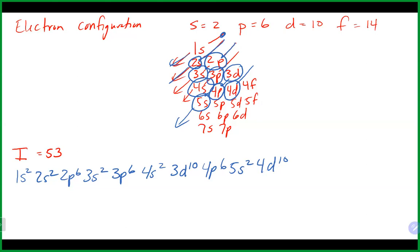So now we need to go to 5p. Counting 5p: 1, 2, 3, 4, 5 — I think 5p5 will get us to 53. That's a long way to go.